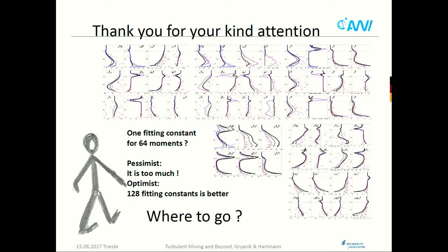Thank you for your kind attention. There are two views — pessimistic and optimistic — on everything that was done. The pessimist will say it would be better to have no fitting constants at all. The optimist says we have a result with PS equal to one-third. That's all, thank you very much.